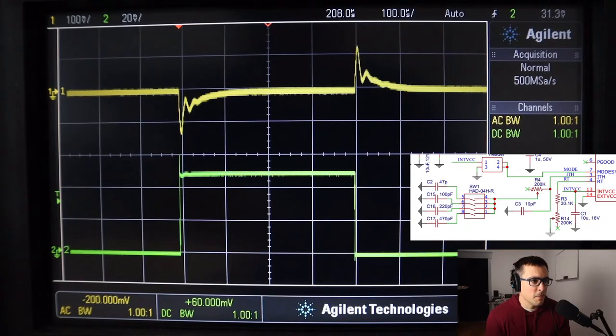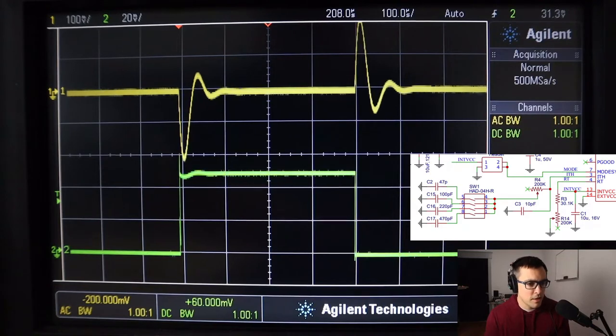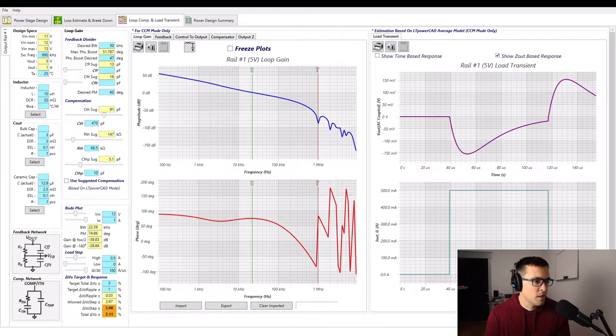I'm going to show how to tune the compensation on this test board by adjusting the RC values at the output of the error amplifier. Then I'm going to look at the simulation in LT Spice to see how I can get very similar results in simulation as to the real board. And then next, look at LT PowerCAD, which will give us not only the transient response, but also a Bode plot. So we can talk about what happens in the time domain and the frequency domain.